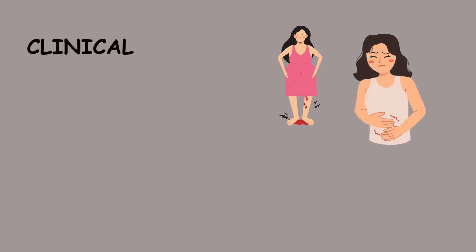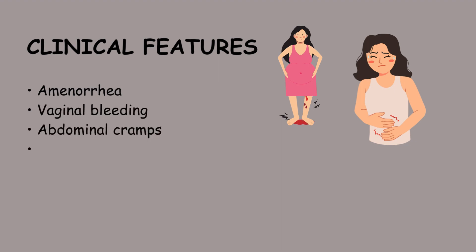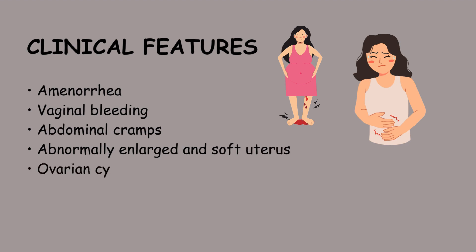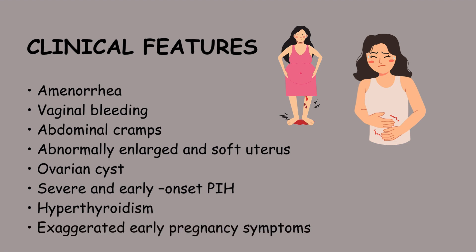Clinical features of molar pregnancies may include amenorrhea, vaginal bleeding, abdominal cramps, an abnormally enlarged and soft uterus, ovarian cysts, severe and early onset pregnancy-induced hypertension, hypothyroidism, and exaggerated early pregnancy symptoms.